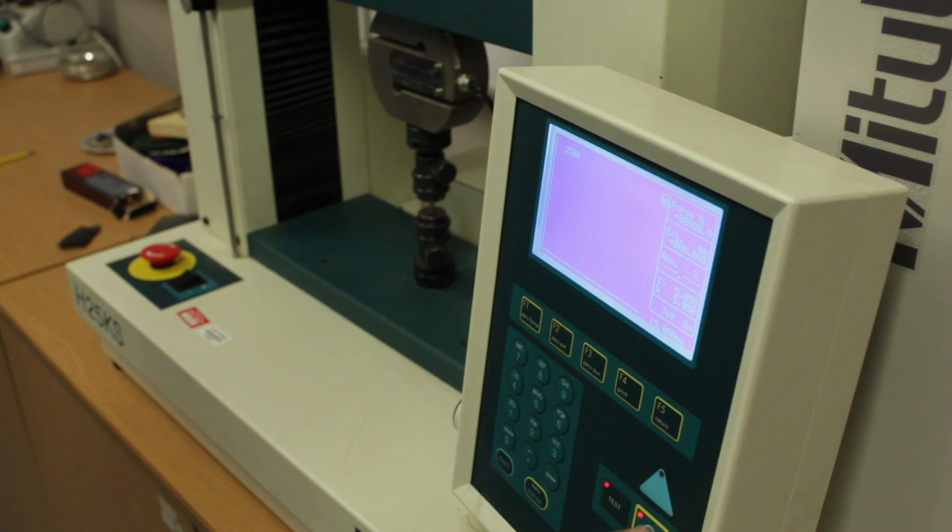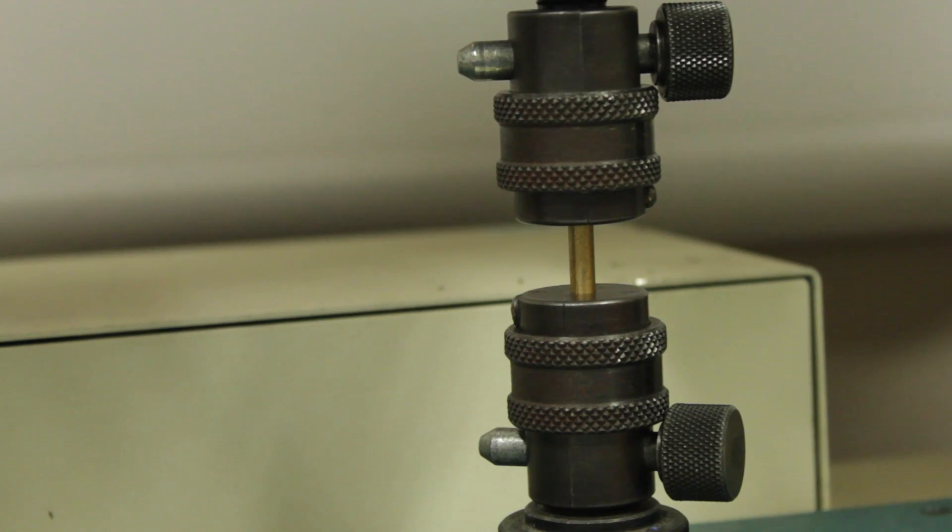We'll then hit the test button and enter continuous jog mode before pressing the up arrow. This will run the test. Ensure that you're wearing safety goggles and that you're stood well back from the machine.